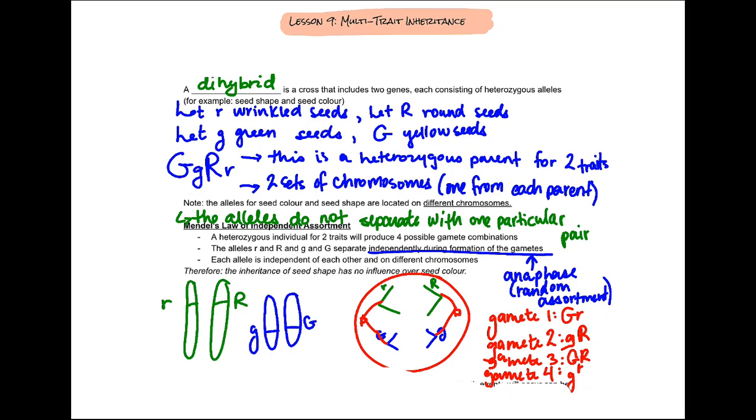So heterozygous individuals, that means that they're going to be heterozygous for both genes or both traits. This heterozygous parent is going to be having the recessive allele present but not expressed and it's going to have two sets of chromosomes that are independent.